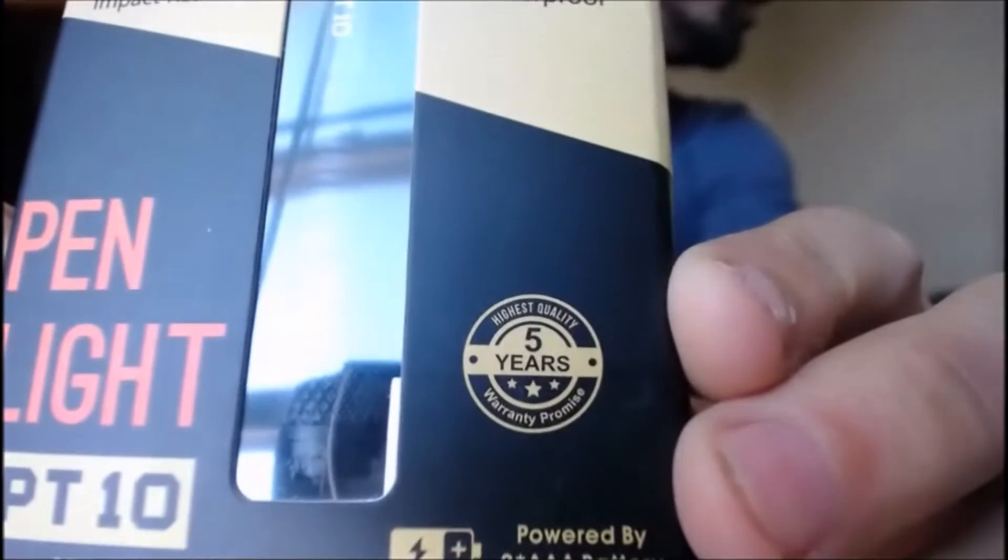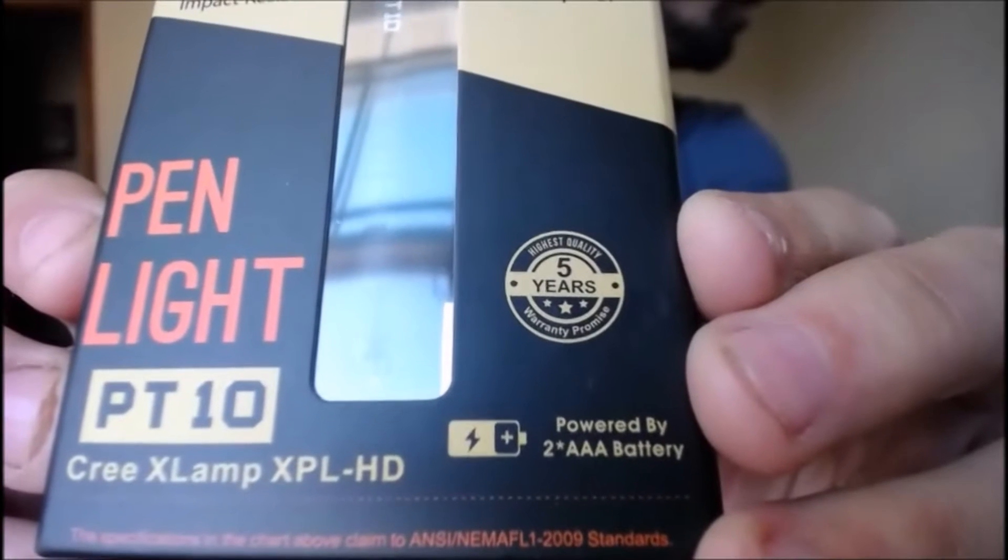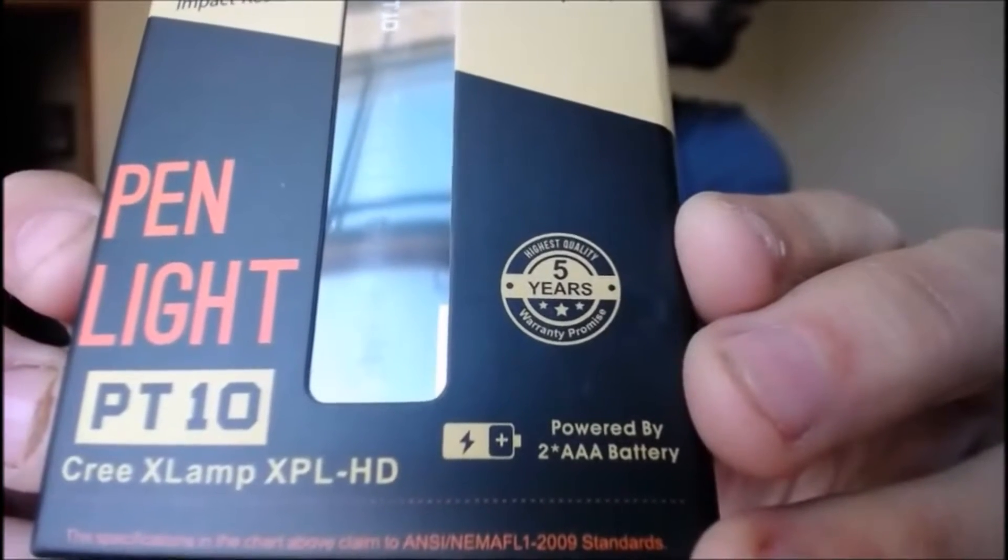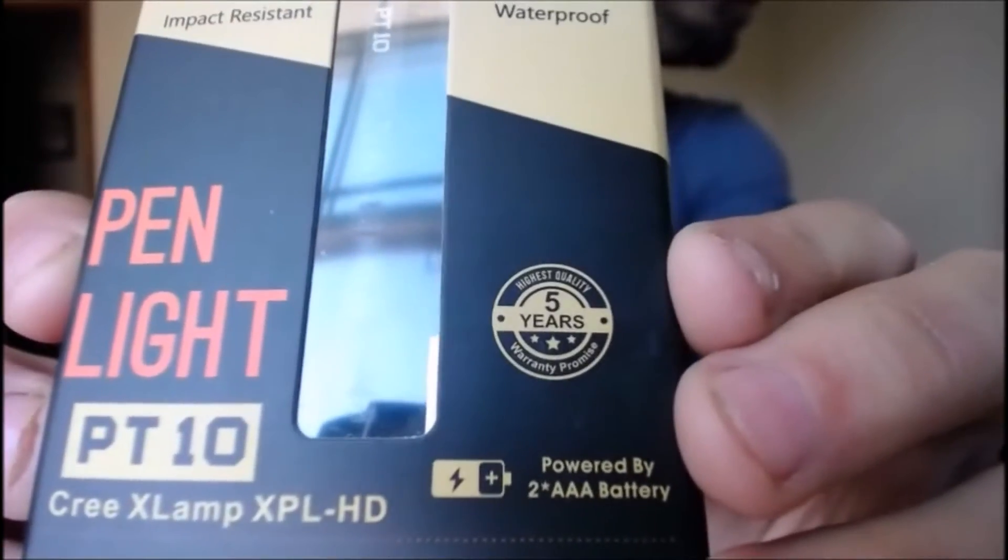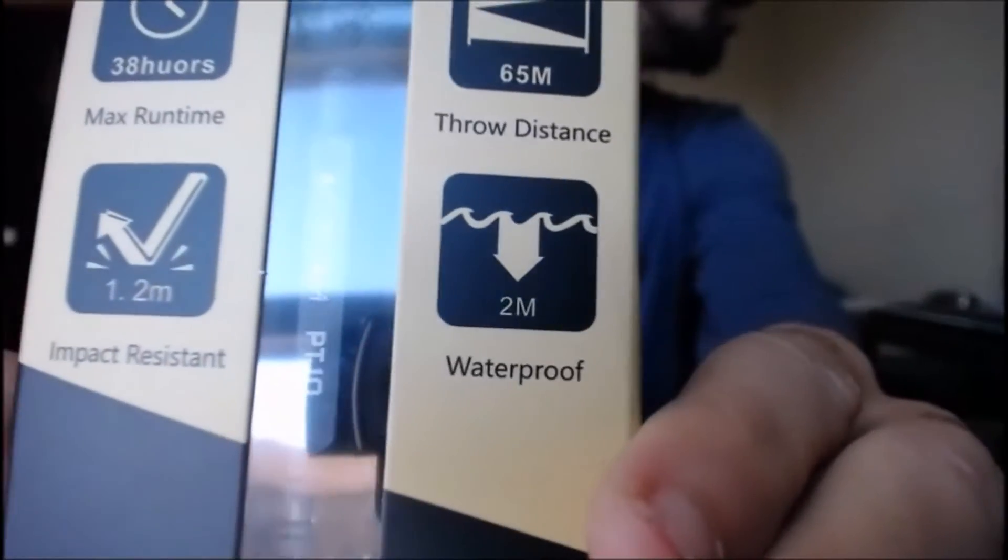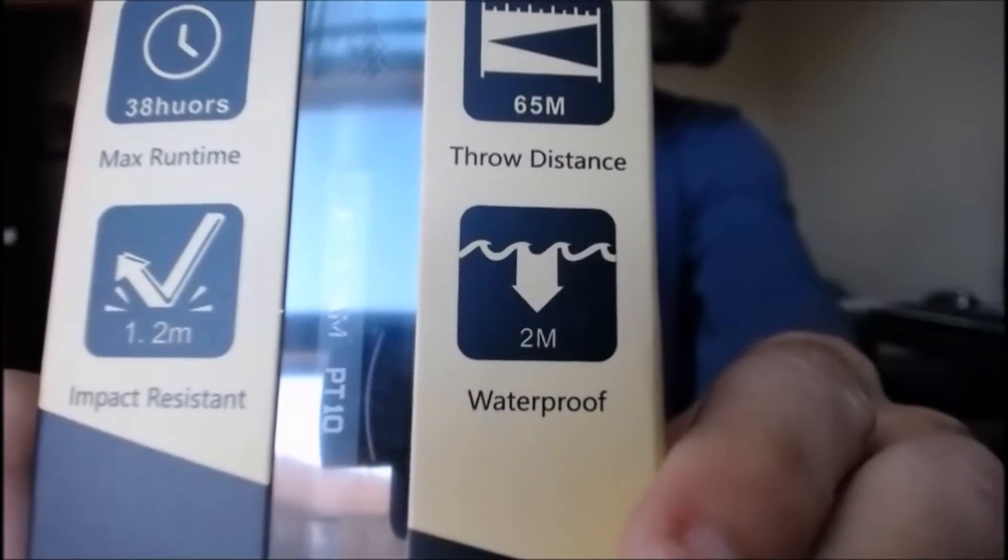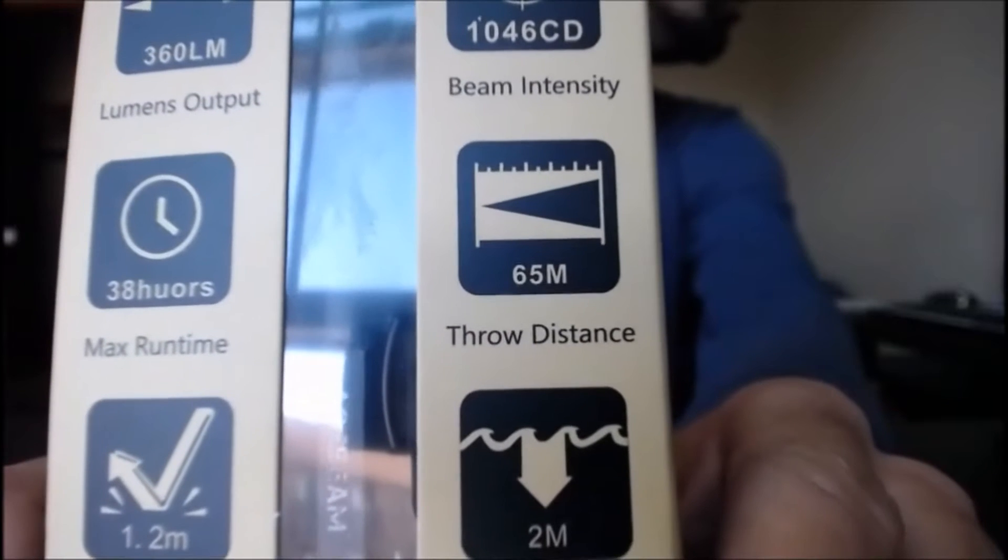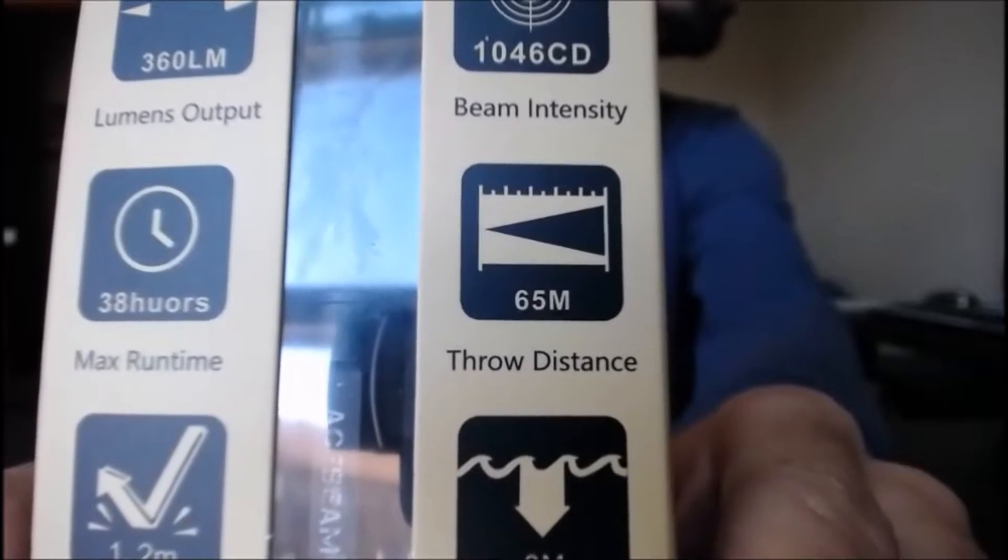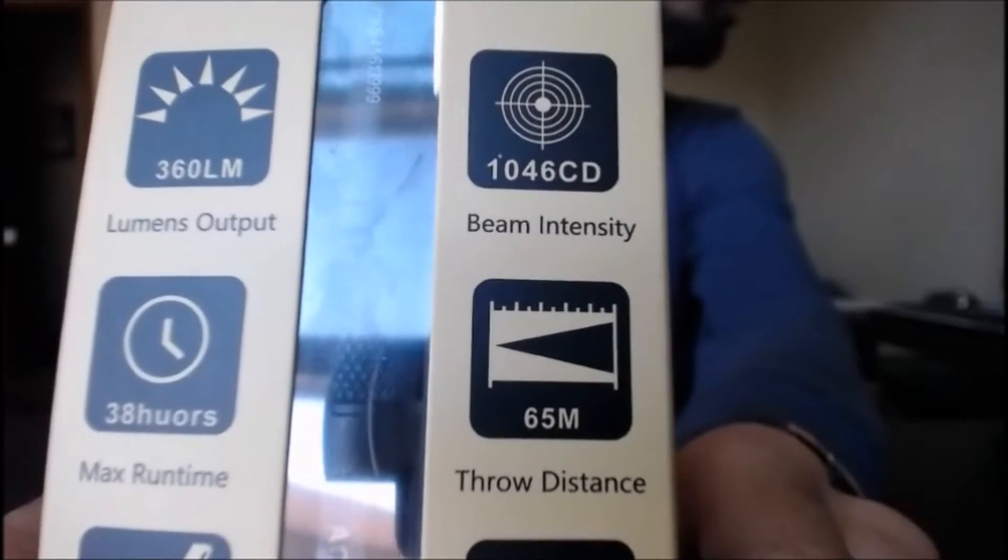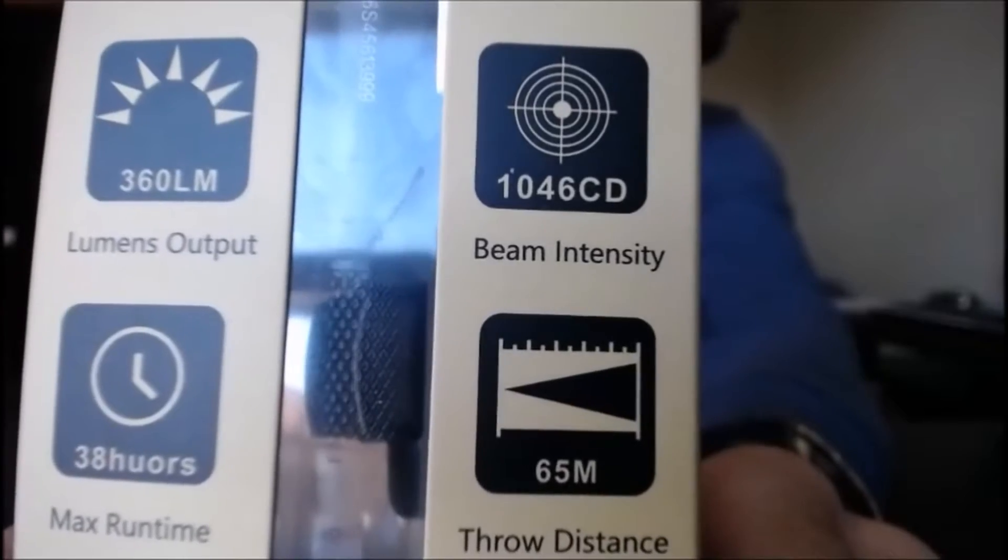So it comes with a five-year warranty. It's powered by two AAA batteries. It has the Cree XPL-HD high density, is the first one to be featured in a flashlight. It's IPX8 waterproof, 2 meter impact resistant, 1.2 meters drop resistant, the throw distance is 65 meters. It will run for 38 hours under the lowest setting, the three lumens beam intensity 1046 candela, and the lumen output is 360 lumens on high.